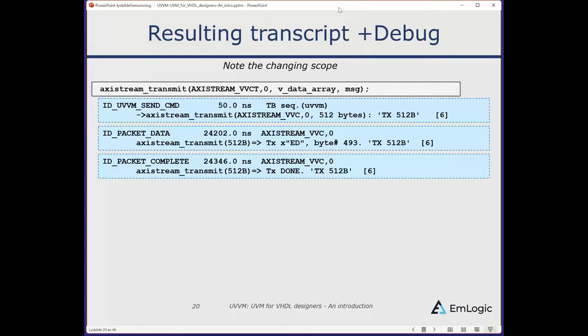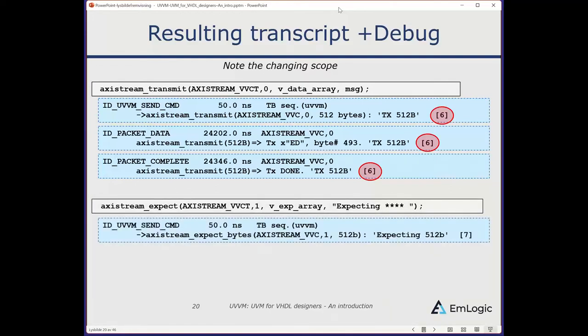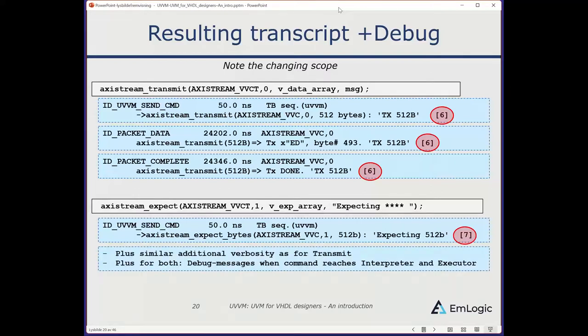Similarly for AXI Stream Expect, you get the same command log from the sequencer — now with command number seven — and similar verbosity as for transmit. You can also have debug messages when commands reach the interpreter and executor, making it really easy to debug your system.